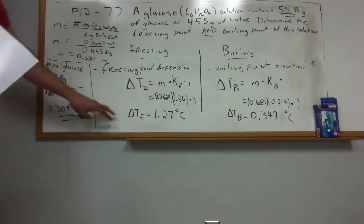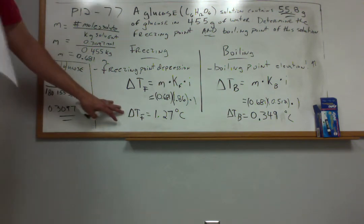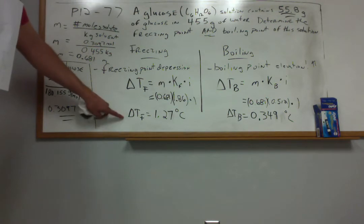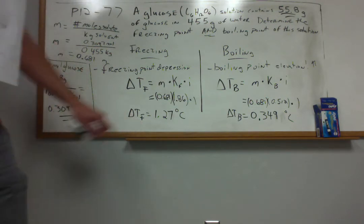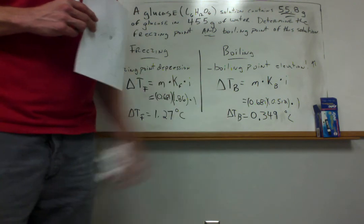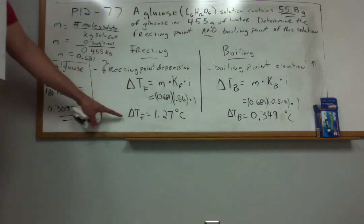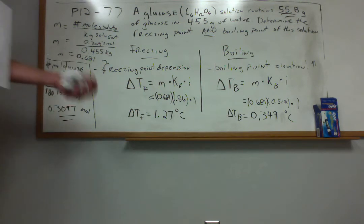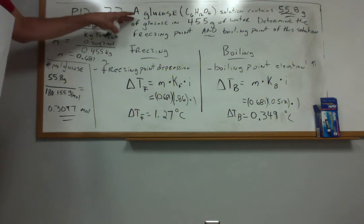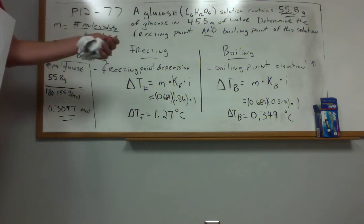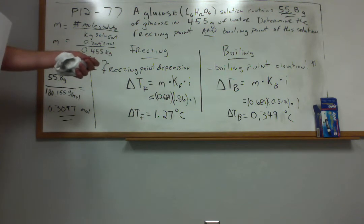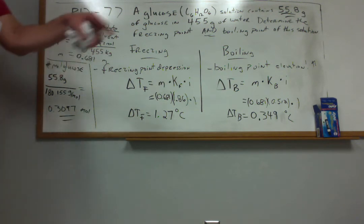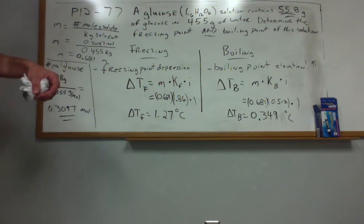Now, these numbers I computed, it's important to understand what they represent. They represent the change in the freezing point and the change in the boiling point. Whenever you see the triangle, it means change, right? So change in the freezing point, change in the boiling point from the solvent's native natural condition. So our solvent here is water, right? And of course we know water boils at 100 degrees Celsius. Water freezes at 0 degrees Celsius. In fact, it sets that Celsius scale for us or that centigrade scale. That's what it does.